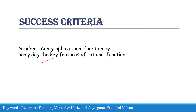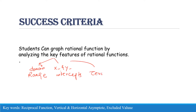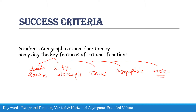When I talk about the key features, I want to discuss the domain and range of the given function. I also want to talk about the x and y intercepts, the zeros of the function, and the asymptotes or holes of the function. These are the key features which I will discuss one by one.